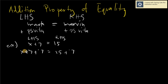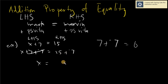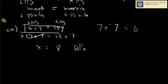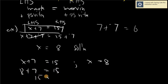Negative 7 and positive 7 would become 0, because if you add a number to its inverse, it becomes 0. So on the right side, 15 plus negative 7 is 8. Therefore x equals 8. You will notice that x is now alone, and this is our solution. X plus 7 equals 15; the answer is x equals 8, because 8 plus 7 equals 15, and 15 equals 15.